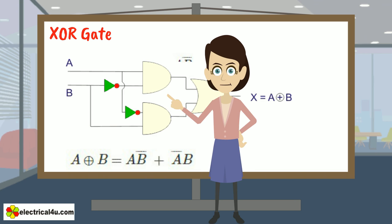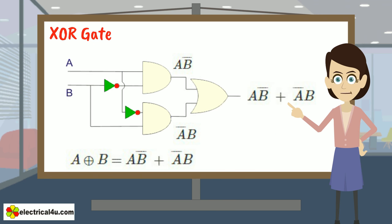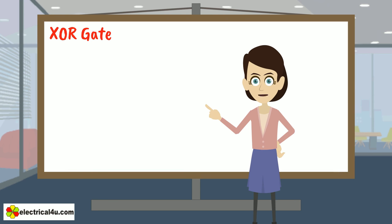The output of this AND gate is AB bar and output of this AND gate is A bar B. These two outputs then are added through this OR gate and gives AB bar plus A bar B. This logic circuit is symbolically represented as.